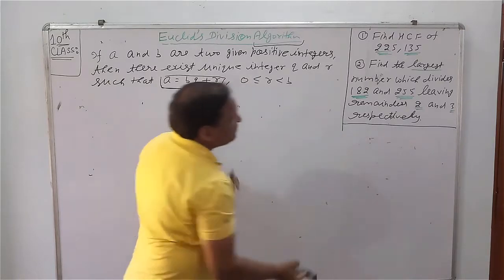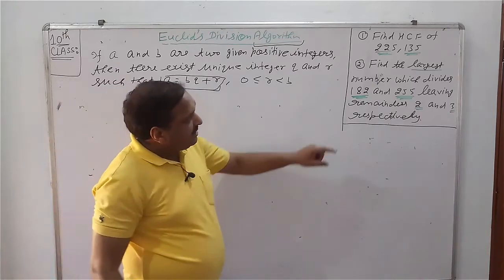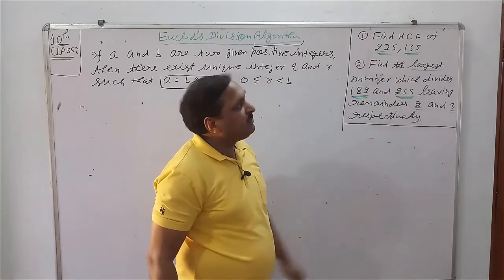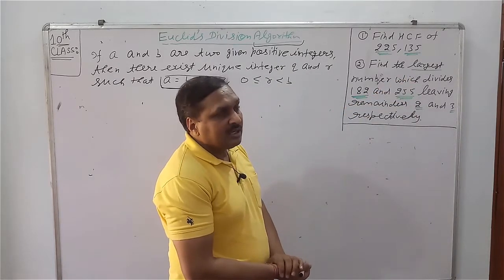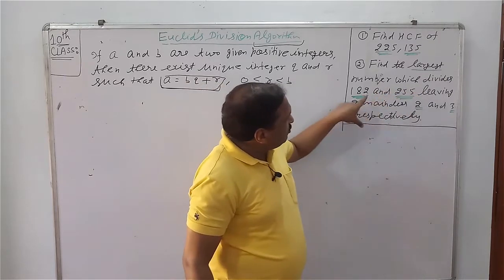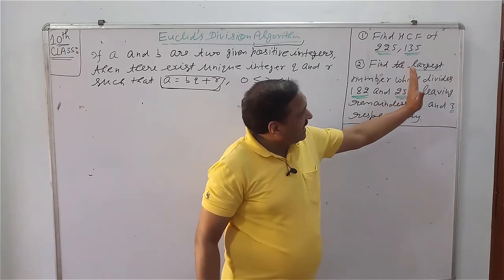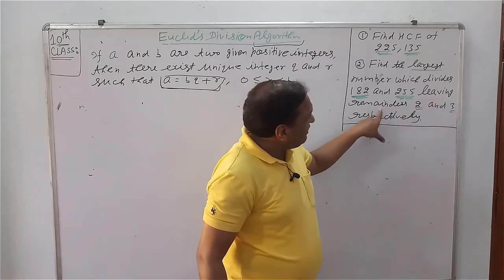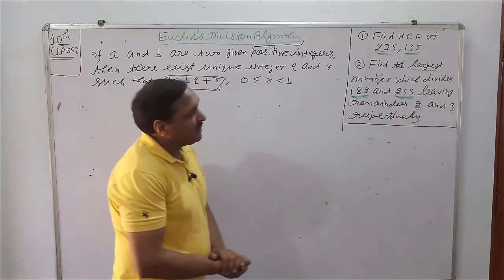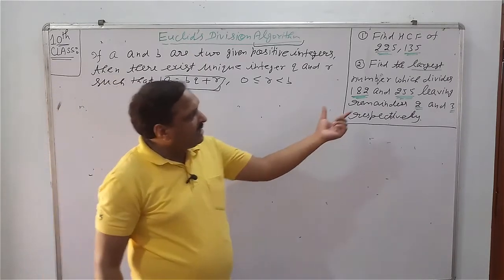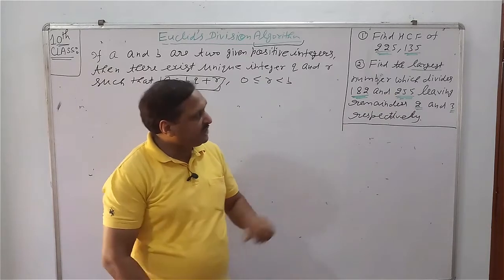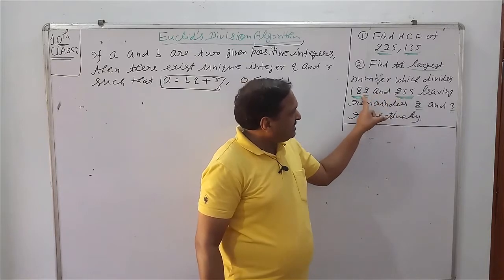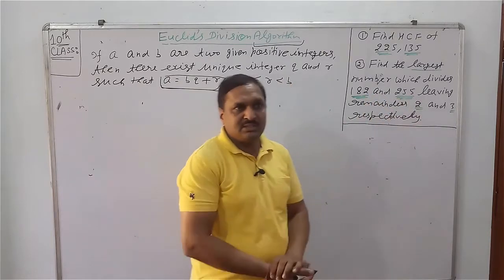These all questions you have to do in previous classes. Second question: find the largest number which divides, largest number means greatest number, so greatest number means greatest common divisor which divides 182 and 255. If we have to do this question with remainder 2 and 3 respectively, greatest common divisor which divides given numbers exactly, but this question, what is that number which divides leaving 2 and 3? So first,